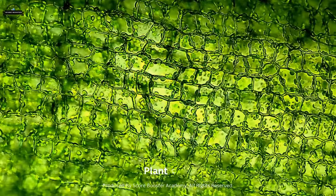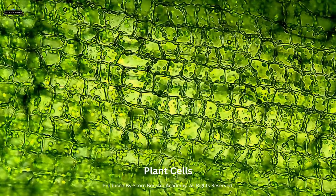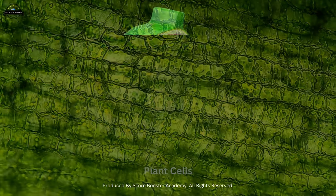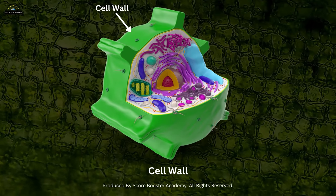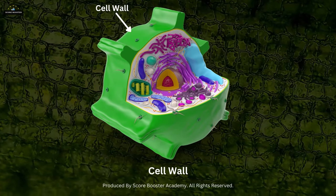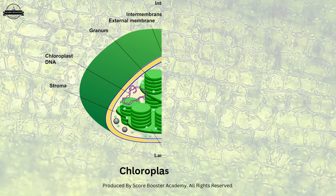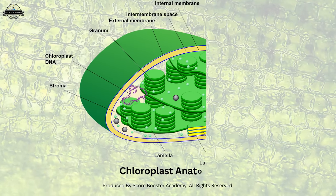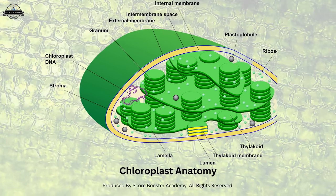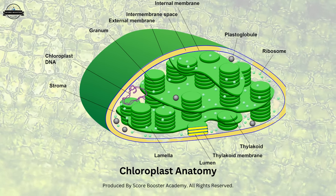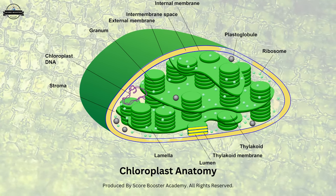Plant cells, on the other hand, have an additional layer called the cell wall, providing extra support and protection. They also contain chloroplasts, which are like mini solar power plants, capturing sunlight to carry out photosynthesis and produce energy-rich molecules.